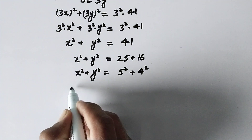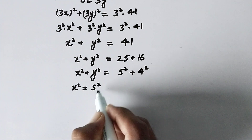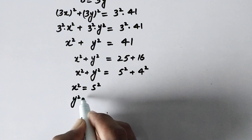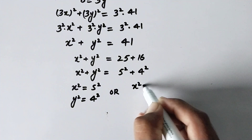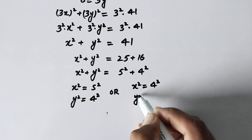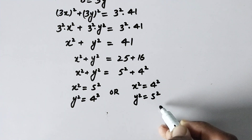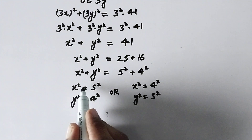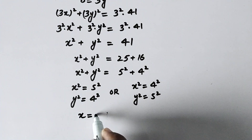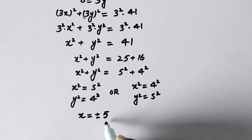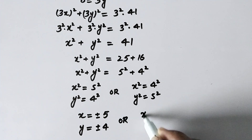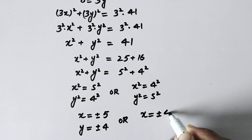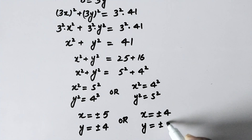In the first case, x squared will be equal to 5 squared and y squared will be equal to 4 squared; or x squared will be equal to 4 squared and y squared will be equal to 5 squared. Taking the square root on both sides, the value of x will be equal to plus or minus 5 and y equal to plus or minus 4, or x equal to plus or minus 4 and y equal to plus or minus 5.